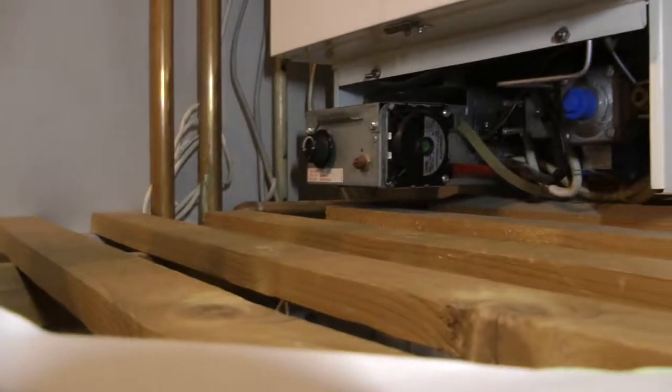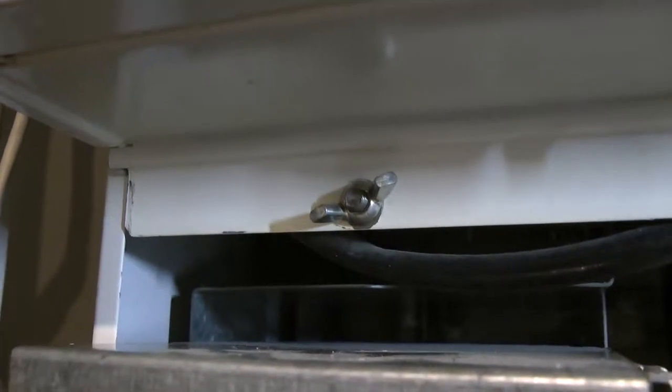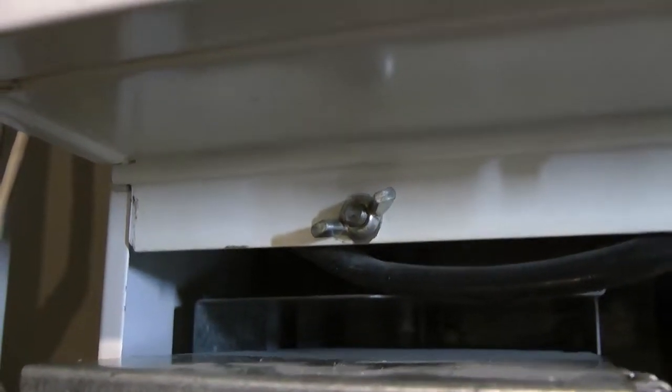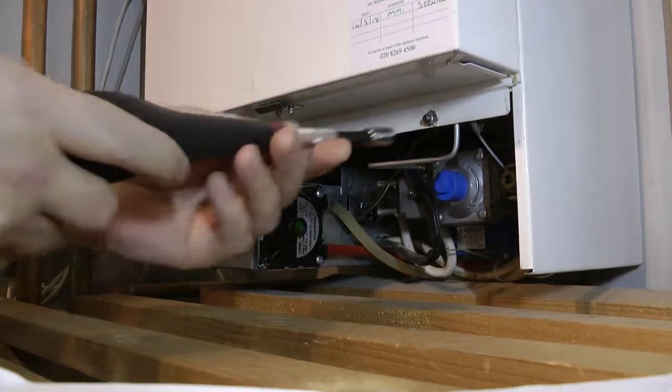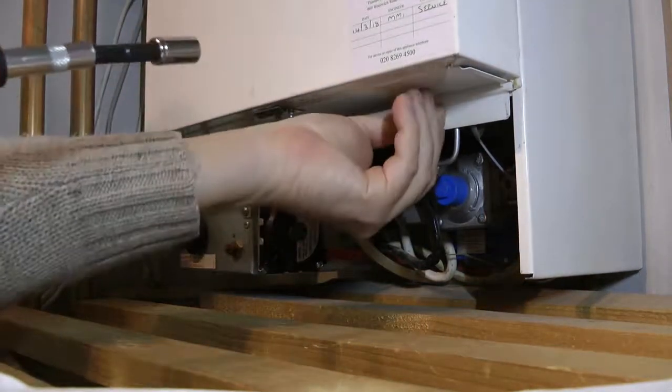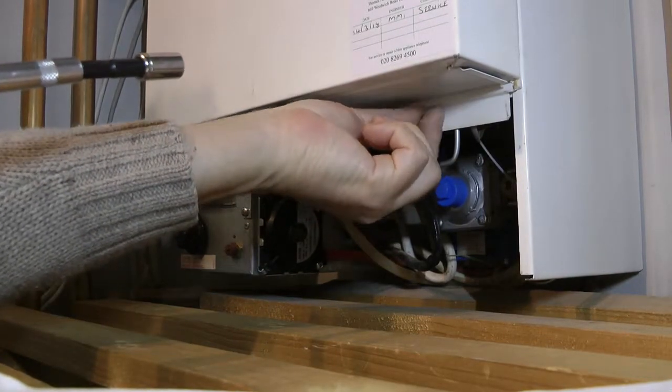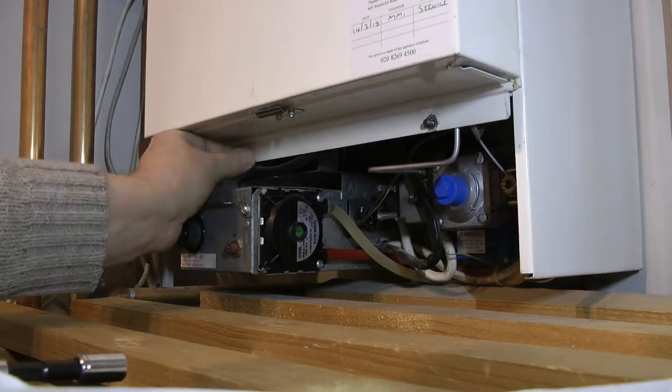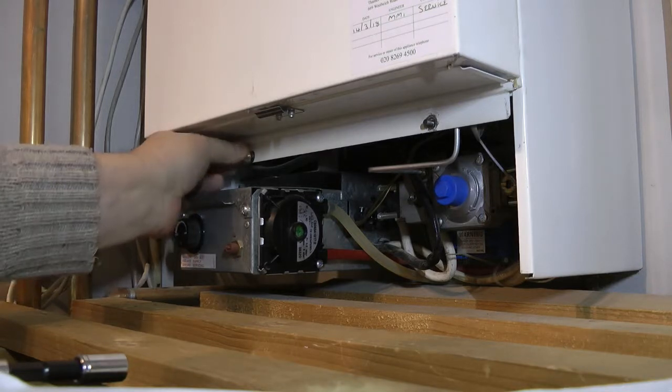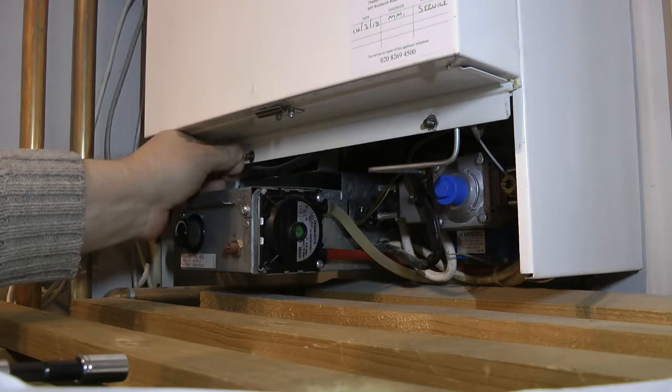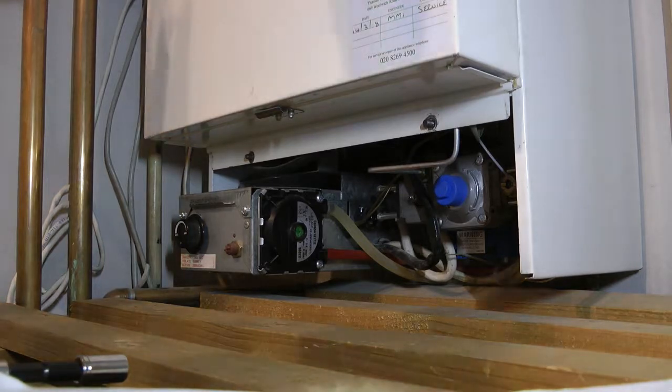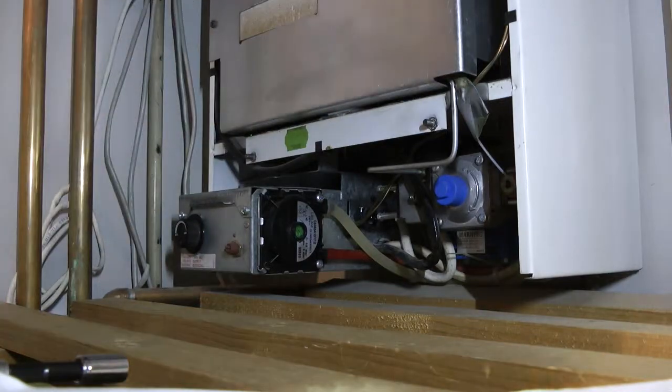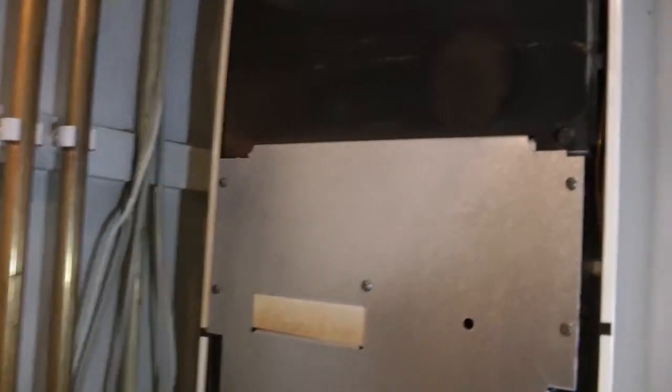You've got to undo that little nut there. And that little nut there. Okay, that's a butterfly nut, because I think the original nut was lost during its service history. So, we're going to undo those two nuts. Obviously, make sure the boiler's turned off while you're taking this cover off and tinkering around. Okay. And voila. That wasn't too bad, was it?